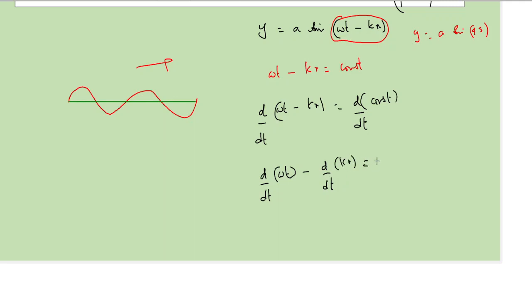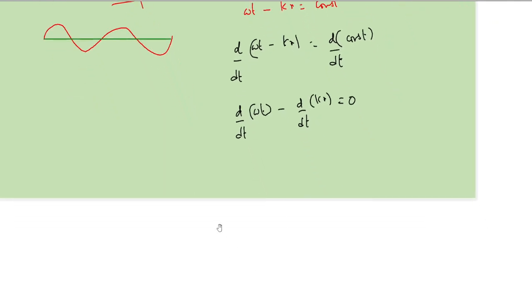Because differentiating a constant will give us zero. Now for a given wave equation, omega is a constant, so omega comes out of the differentiation symbol. So what remains is d by dt of just t minus k times d by dt of x, that is equal to zero.